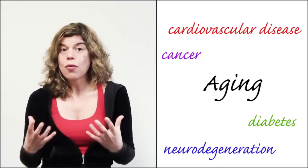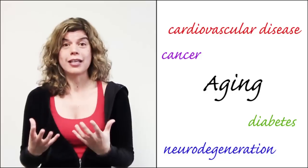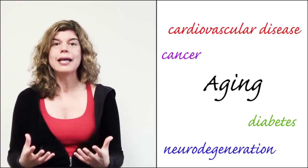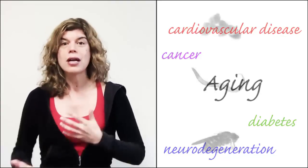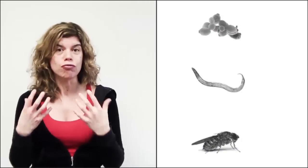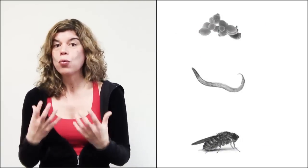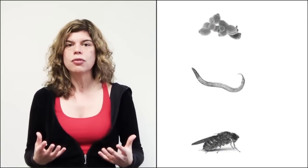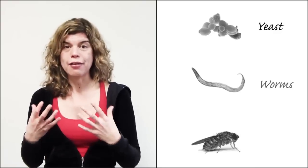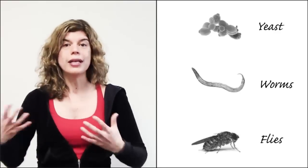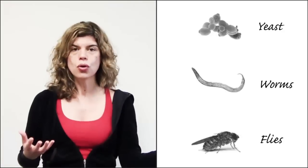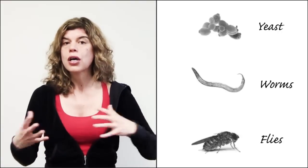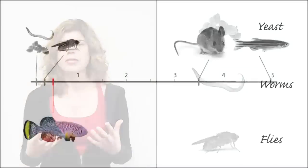So far there's been a lot that has been learned from short-lived model systems because they allow you to do screening and rapid experiments. And the ones that have been used very successfully are yeast, worms, and flies. They've allowed identification of genes that are conserved all the way to humans to modulate the aging process.